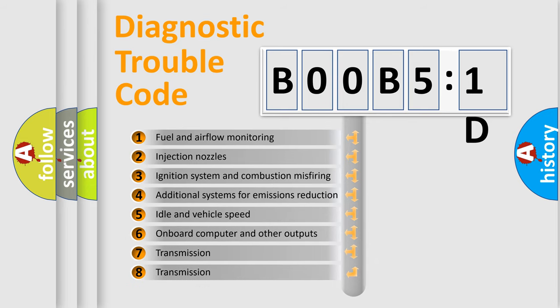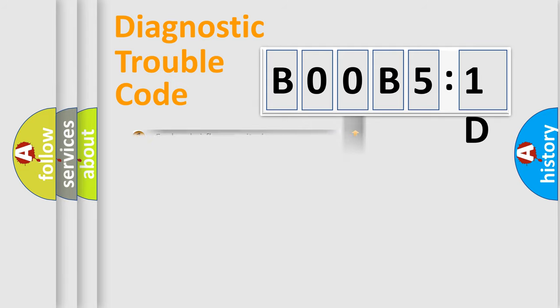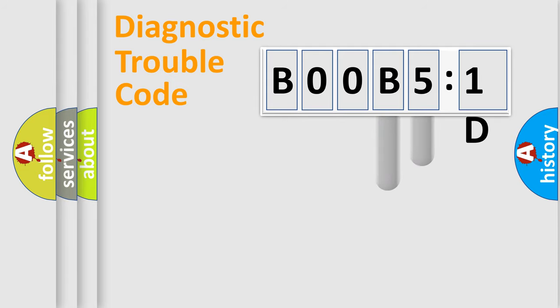The third character specifies a subset of errors. The distribution shown is valid only for the standardized DTC code. Only the last two characters define the specific fault of the group.